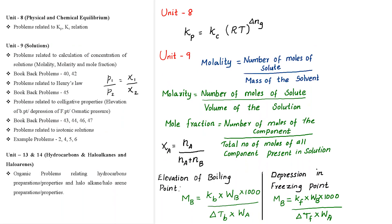Next, Unit 8: Physical and Chemical Equilibrium. This unit covers Kp and Kc relation related problems. The formula is: Kp = Kc × (RT)^Δng. This formula is really important.